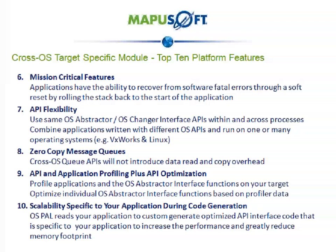Number seven, cross-OS allows for using the same OS Abstractor or OS Changer interface APIs within and across processes. It is also possible to combine applications written with different OS APIs and run on one or many operating systems. Number eight, cross-OS includes zero copy message queues so APIs will not introduce data read and copy overhead. Number nine, cross-OS provides API and application profiling for API optimization, allowing for profiling applications and the OS Abstractor interface functions on your target and optimizing individual OS Abstractor interface functions based on the profiler data. Number ten, cross-OS provides scalability specific to your application during code generation. OS PAL reads your application and custom generates optimized API interface code specific to your application to increase performance and greatly reduce memory footprint.